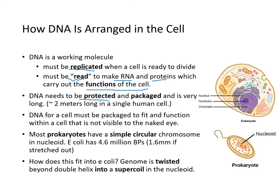DNA is the working molecule that must be replicated when a cell divides, and must be read to make RNA and protein. DNA needs to be protected and packaged — it is about two meters long if stretched out in a single human cell. Most DNA is located in the nucleus. The nucleolus is where ribosomal RNA is made and ribosomes are synthesized. Chromatin refers to various states of condensation of the DNA.